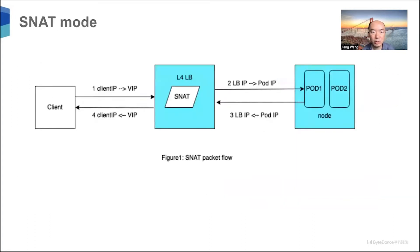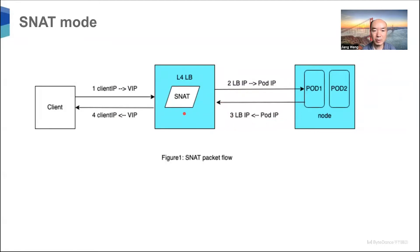In CDIM, there are two networking modes. One is the SNAT source NAT mode. For the source NAT mode, the client sends the request to the VIP and it goes to the load balancer. The load balancer will replace the source IP with the load balancer IP and the destination IP as the pod IP, and the packet reaches the pod. When the pod replies, it also goes to the load balancer. The load balancer translates the source IP back to the VIP. That means every request will go to the load balancer. If there are lots of nodes, the load balancer may become a bottleneck.